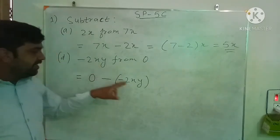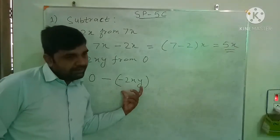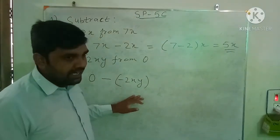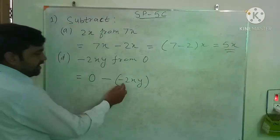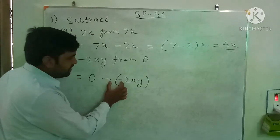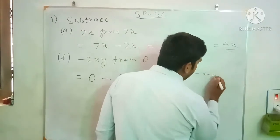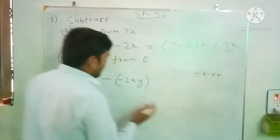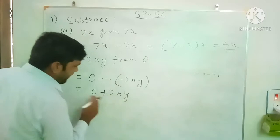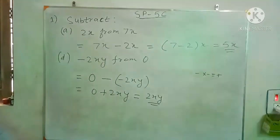Since the term you are going to subtract is negative, always write the negative term in the bracket to minimize error in calculation. When you open the bracket, this minus will multiply with this minus, and the product of two minus signs gives you plus. So minus times minus gives plus. The answer is 0 plus 2xy, which equals 2xy.